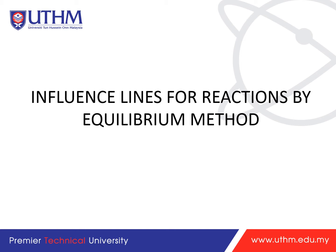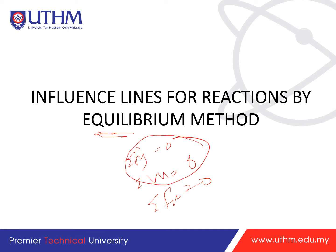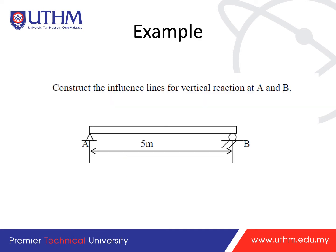For influence lines for reactions using the equilibrium method, we use: sum of Fy = 0, sum of moments = 0, and sum of Fx = 0. Now, construct the influence line for vertical reactions at A and B — for example, when a moving load of 1 kilonewton is on the beam, what is the reaction force?